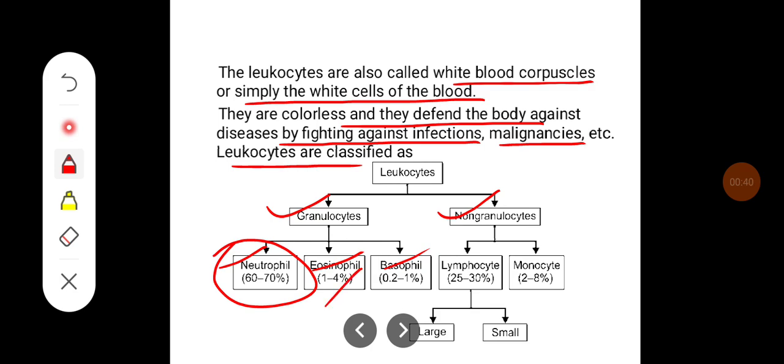Eosinophil between 1 to 4 percent and basophil less than 1 percent. Among agranulocytes, lymphocytes form 25 to 30 percent of all the total leukocytes and monocytes 2 to 8 percent. Lymphocytes can be classified as large and small lymphocytes based on their size.